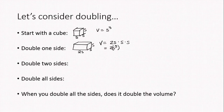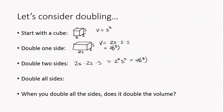What would happen if we doubled two sides? This time, instead of drawing it, let's just write the dimensions: two sides are 2s and one side is s. So the volume would be 2s × 2s × s, which equals 2² × s³, or 4s³.